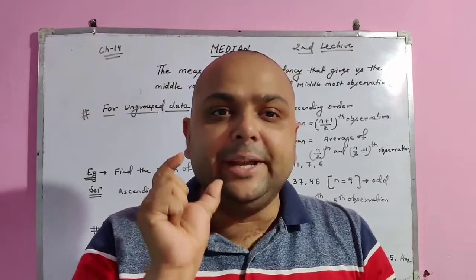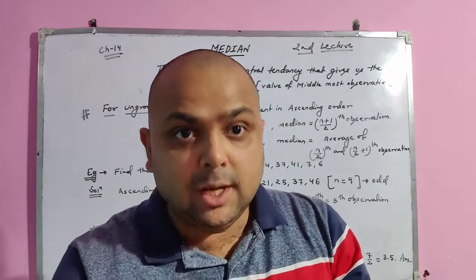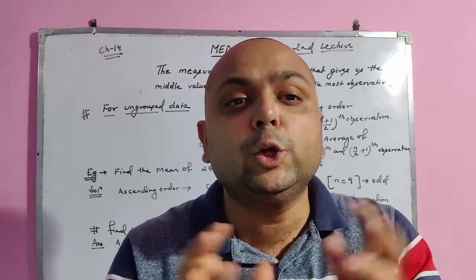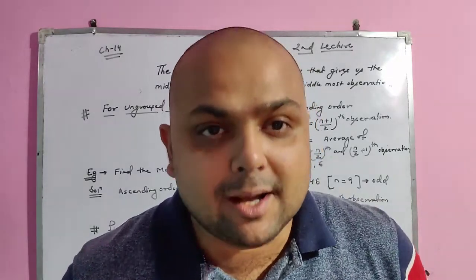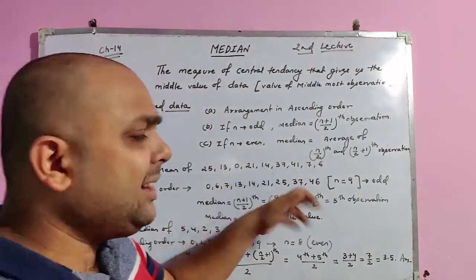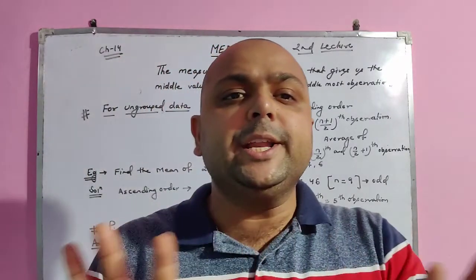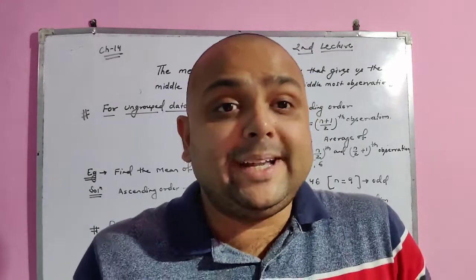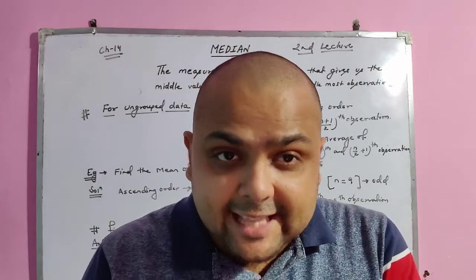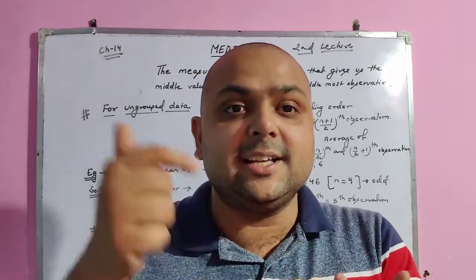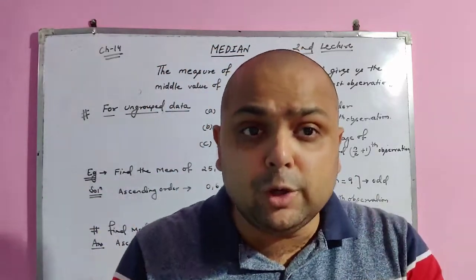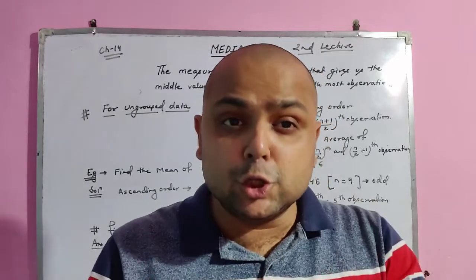As the name median indicates the middle value, it has two types of operations. First, when we talk about ungrouped distribution having no continuous class interval — for example, 25, 13, 0, 21 — there is no continuous class interval. For that data, to calculate the median we first arrange in ascending order, then find whether the number of terms is even or odd, and apply the corresponding formula.